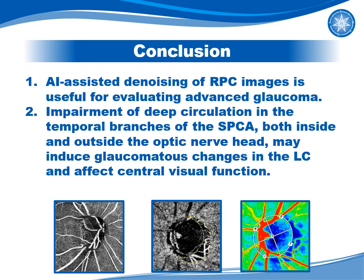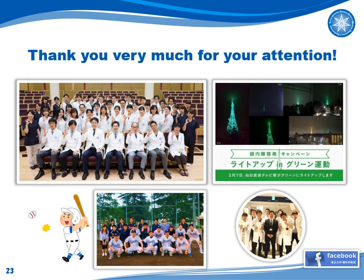In conclusion, AI-assisted denoising of RPC images is useful for evaluating advanced glaucoma. Impairment of deep circulation in the temporal branch of SPCA, both inside and outside the optic nerve head, may induce glaucomatous changes in the lamina cribrosa and affect central visual function.